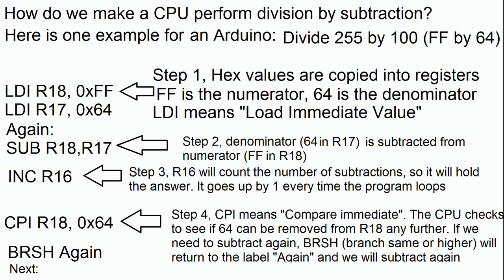On step four, what happens is a comparison is made between 64 and whatever the result is in R18. If we took 64 out of FF, we're left with something that is still larger than 64. So then we go down to the final step which is branch same or higher again. We'll go up again to the again label and we'll subtract again. We're going to subtract R17 from R18 again so we're going to take 64 out of whatever remains. The counter is going to go up by one again so now R16 is going to be at two. We'll make the comparison again and the CPU will say okay, whatever is in R18 is actually less than 64, so we can go to the next routine and continue the division.